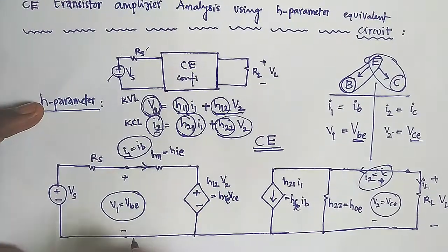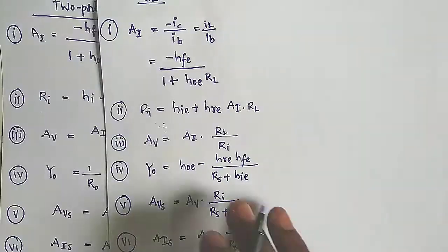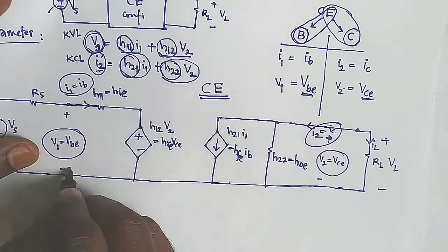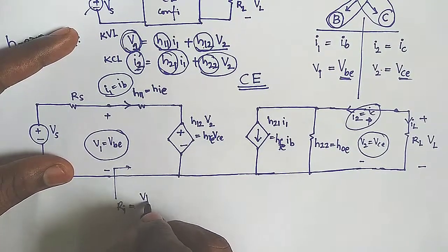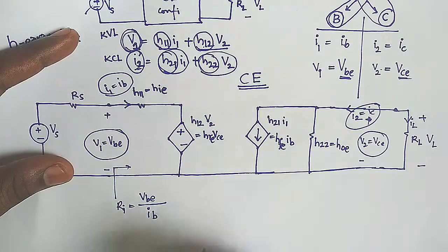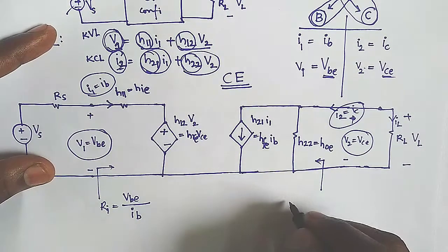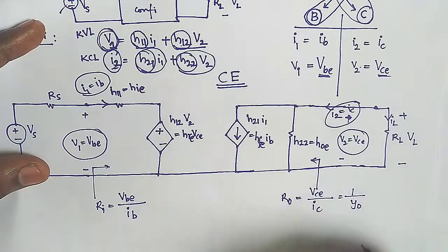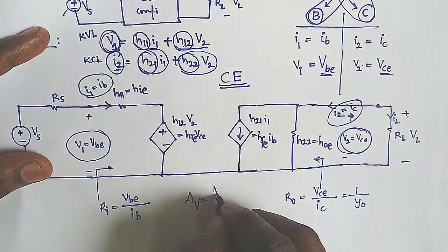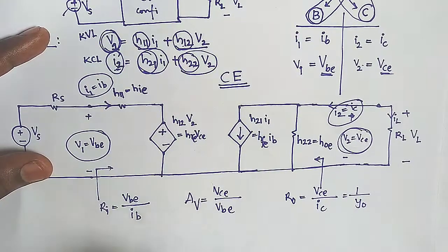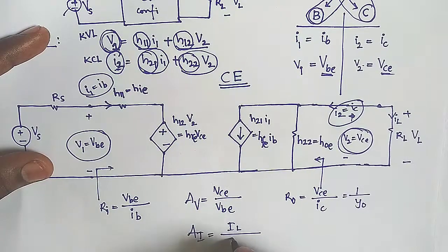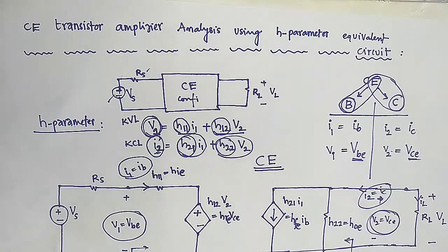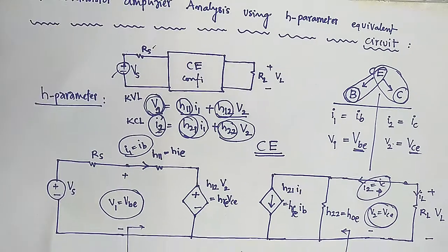In conclusion, from the small signal hybrid model expressions you can calculate all parameter values. RI is the input impedance equal to VBE/IB. The output resistance R0 = VCE/IC = 1/Y0. The voltage gain AV = VCE/VBE and the current gain AI = IL/IB = −IC/IB. This completes the derivation for CE transistor amplifier analysis using H parameter equivalent circuit.